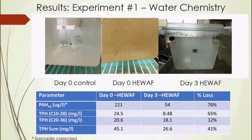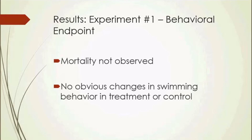Here are the water chemistry results from the first experiment. The picture shown reflects what the chemistry data tells us: on day zero the control is clean and the HEWAF is brown, but by day three the HEWAF looks quite clear, with oil droplets coalesced on the inside of the tank. We lost 76% of our PAH45 over the 72-hour exposure period, 65% of our diesel range TPH, and 12% of our motor oil range TPH — we lost quite a bit of our exposure concentration over the course of the experiment.